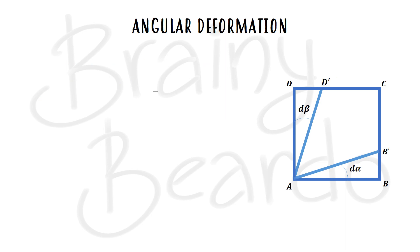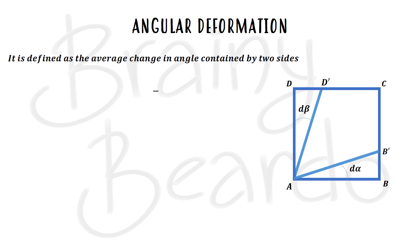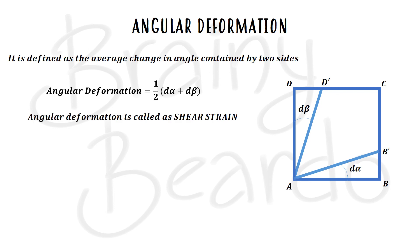Because of rotation, the fluid element that was originally square in shape has changed or deformed its shape. This deformation is called angular deformation. Mathematically, it is defined as the average change in the angle contained by the two sides. From the diagram, the changes in angle of the two sides are dα and dβ. Therefore, angular deformation = ½(dα + dβ). This deformation occurs because of parallel velocities — that is, shear — so angular deformation can also be called shear strain.